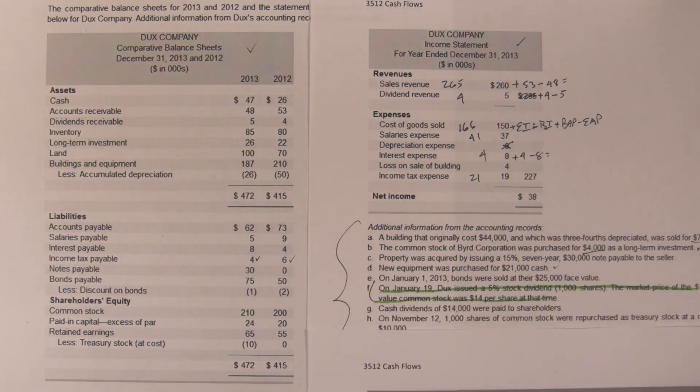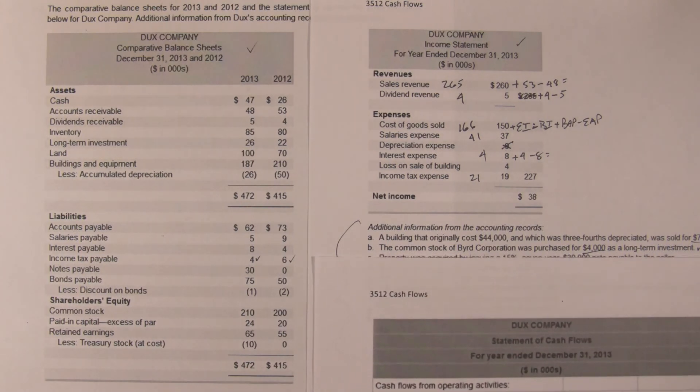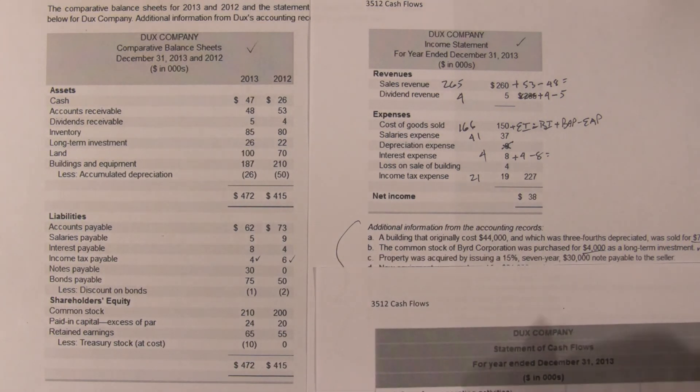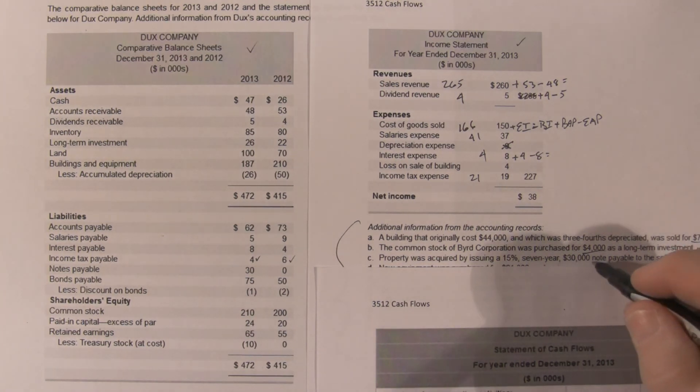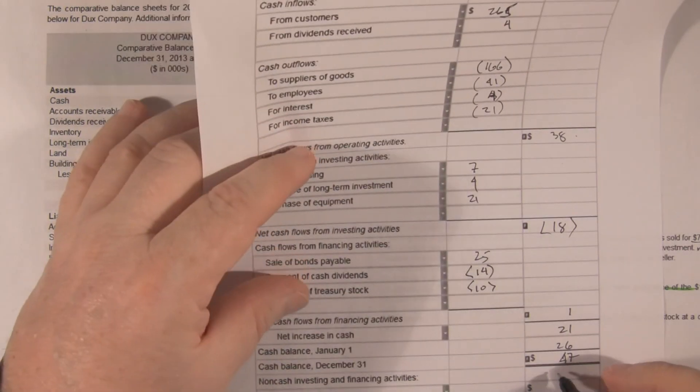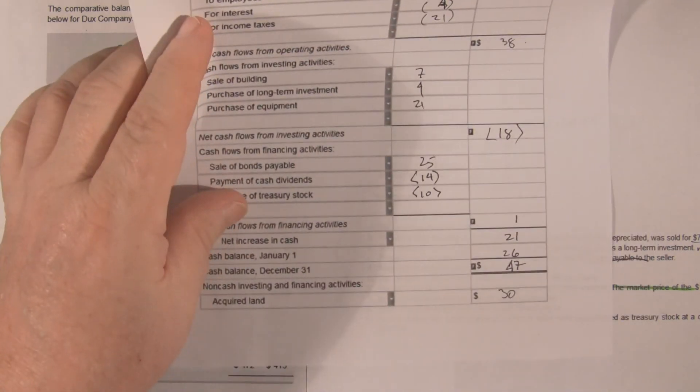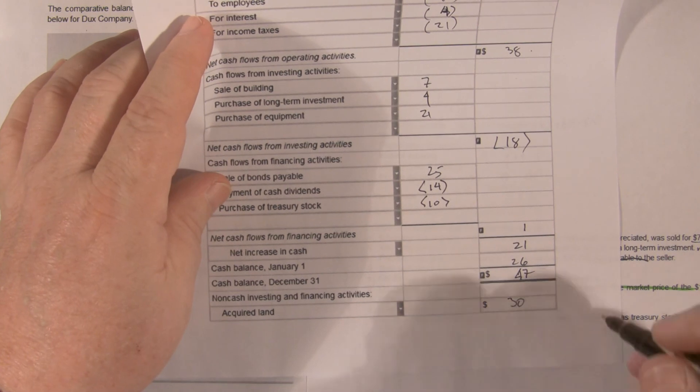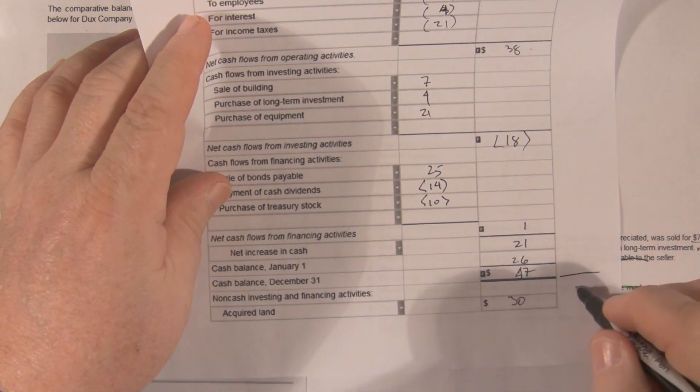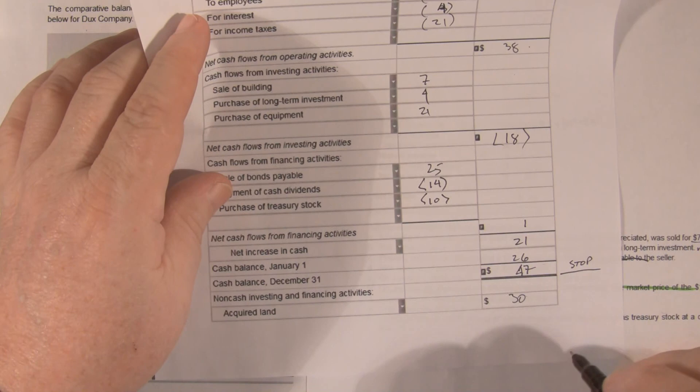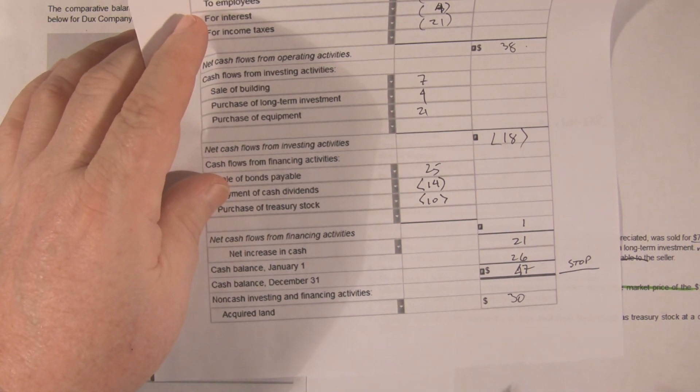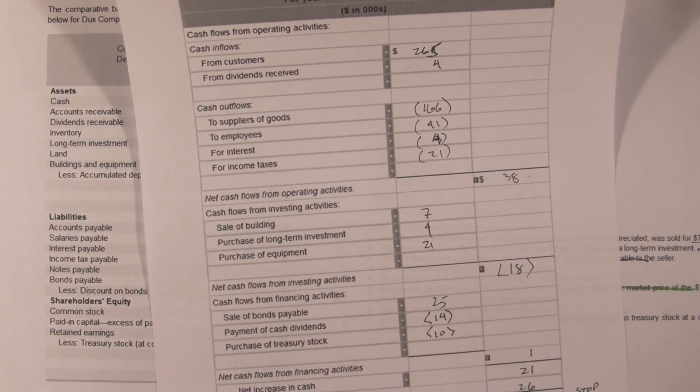Now there's one other piece that we need to consider here. And where is it? Where they bought the land. Property was acquired issuing a 15% seven-year note payable. So not cash. That's required supplementary information. $30,000 at the bottom. Not cash. This is where the statement of cash flow stops. Below that is supplemental information.